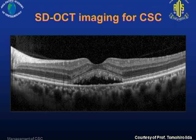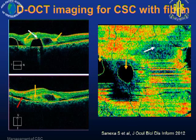With the use of spectral domain enhanced depth imaging, we can see that patients with CSC will have a very thickened choroid, and here you can see the serous retinal detachment. On en face OCT, we can also sometimes see multiple areas of PED as well as fibrinous exudate collected within the subretinal fluid.